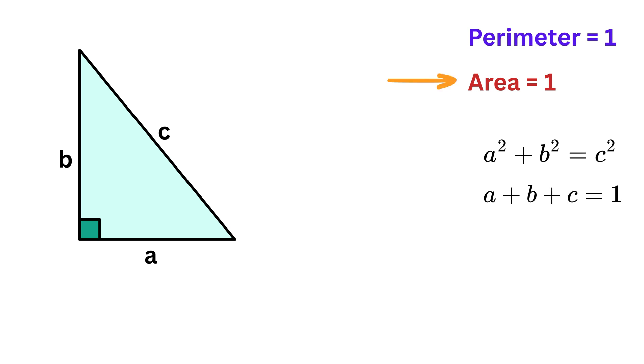The second condition is that the area of this triangle is one. For any triangle, the area is calculated as half times base times height. In our case, since the right angle is between the sides A and B, we can treat A as the base and B as the height. So the area becomes half times A times B, and since we are told that the area is 1, half AB equals 1. Multiply both sides by 2, and we get A times B equals 2.